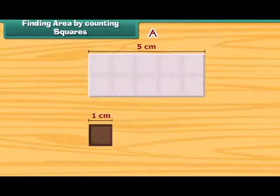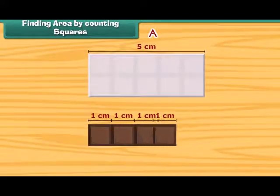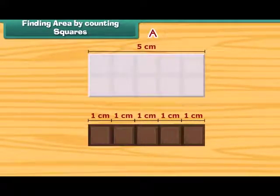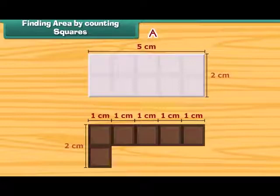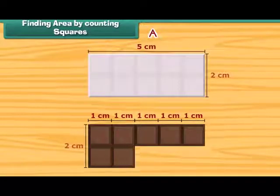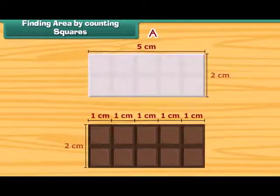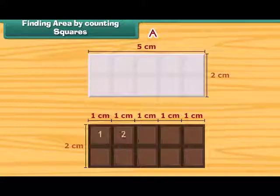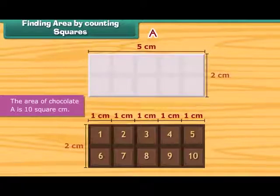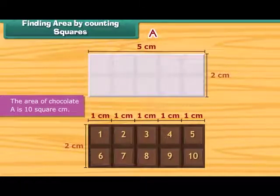Five squares can be arranged along its length. The width of this chocolate is two centimeters, so two squares can be arranged along its width. Thus, in total, ten squares can be arranged on it. So, the area of chocolate A is ten square centimeters.